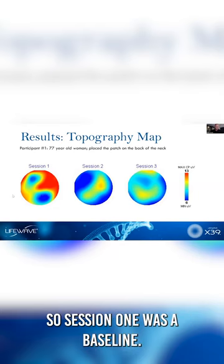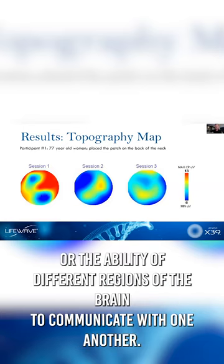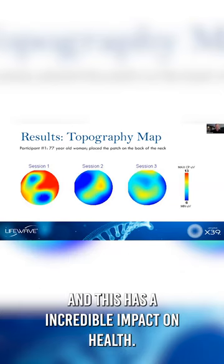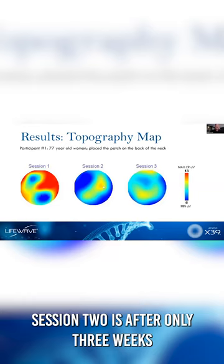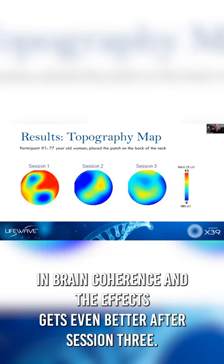So session one was at baseline. And what we're seeing with these red areas is a lack of brain coherence, or the ability of different regions of the brain to communicate with one another. And this has an incredible impact on health. Session two is after only three weeks of using X39, where we see a dramatic improvement in brain coherence, and the effect gets even better after session three.